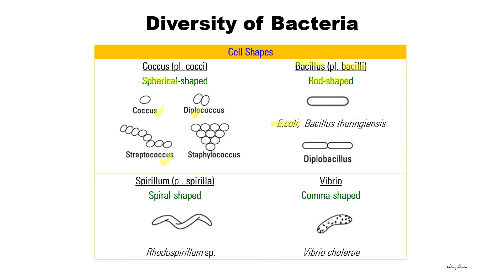The next shape is bacteria in comma shape. We call it Vibrio. An example is Vibrio cholerae.